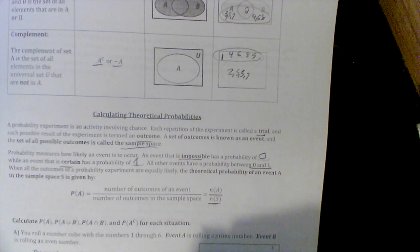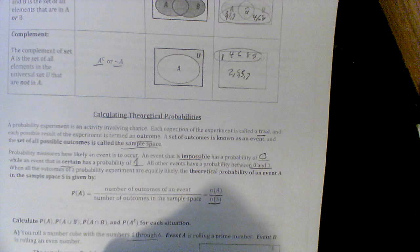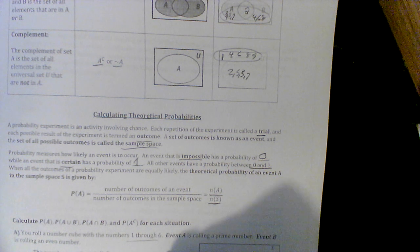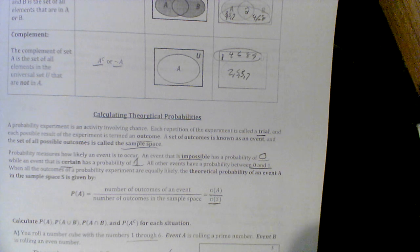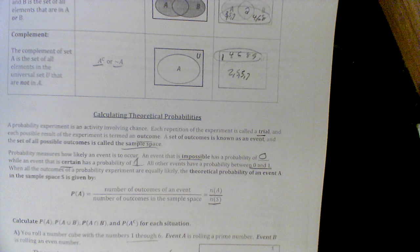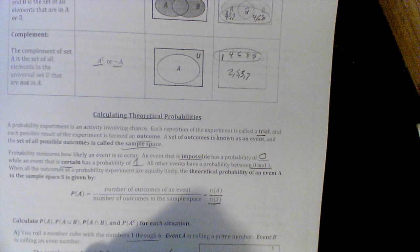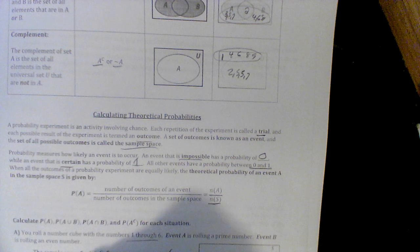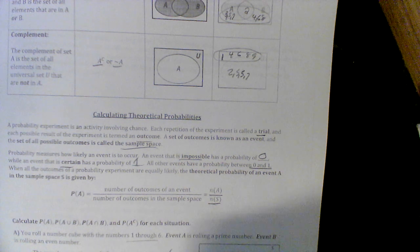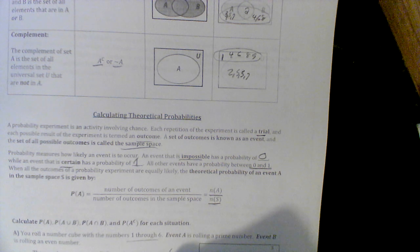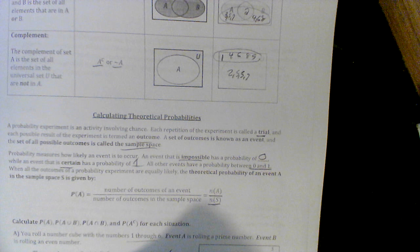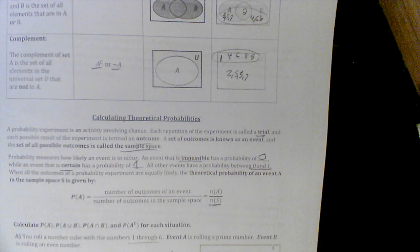The sample space looks like we're rolling a die, so my sample space is literally 1, 2, 3, 4, 5, 6, and the number is 6. Event A appears to be prime, so we got 2, 3, and 5. The number would be 3. Event B is even numbers, so 2, 4, and 6, also a number of 3.